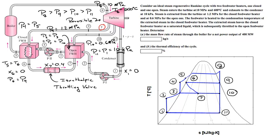At point 6 we're at a higher pressure of 1.2 MPa, so we need a throttling valve here. You can think of it as a valve or a tiny orifice. The idea is that you drop the pressure isenthalpically — if you work the energy balance with the adiabatic assumption, you'll find that delta H equals zero across this throttling valve. Ultimately you're asked to find the mass flow rate of steam through the boiler for a net power output of 400 MW.